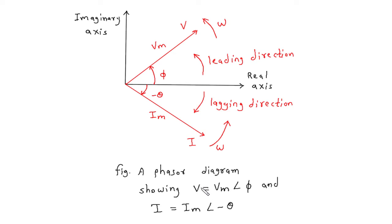The voltage and current — this is an instantaneous voltage and this is an instantaneous current — are given in polar form. Now here we can see this is a complex plane. The real axis and imaginary axis form a complex plane, and here this is a phasor.